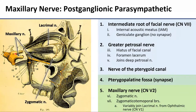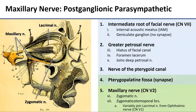The maxillary nerve — remember, this is the second division of trigeminal — exits the middle cranial fossa through foramen rotundum and comes out into the pterygopalatine fossa. If there was an injury to the nerve right here at foramen rotundum, it would not have met up with those preganglionic fibers from the facial nerve yet. So the flow of parasympathetics from that point on would not be affected at all.